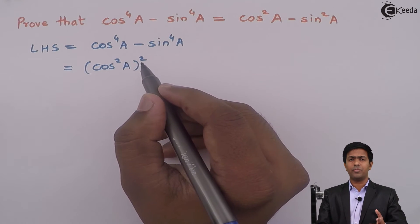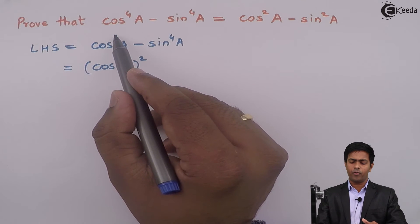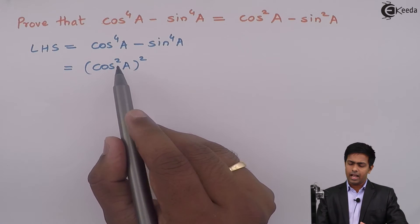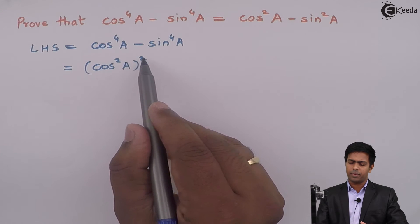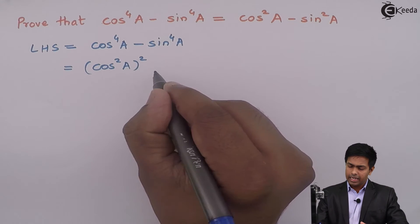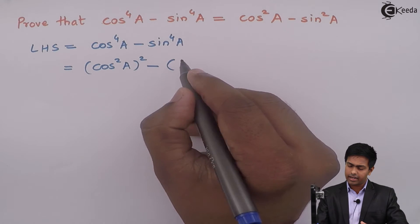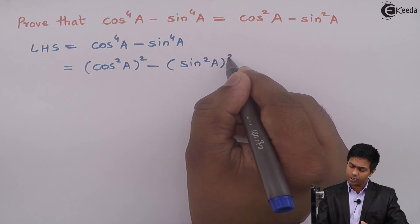I will write down this cos raised to 4A as cos square A the whole square. So by doing this, what I am doing is I am reducing this power 4 into power 2. And cos square A the whole square will become cos raised to 4A. Next minus, I will write down this as sin square A the whole square. So this term is also converted into power 2.